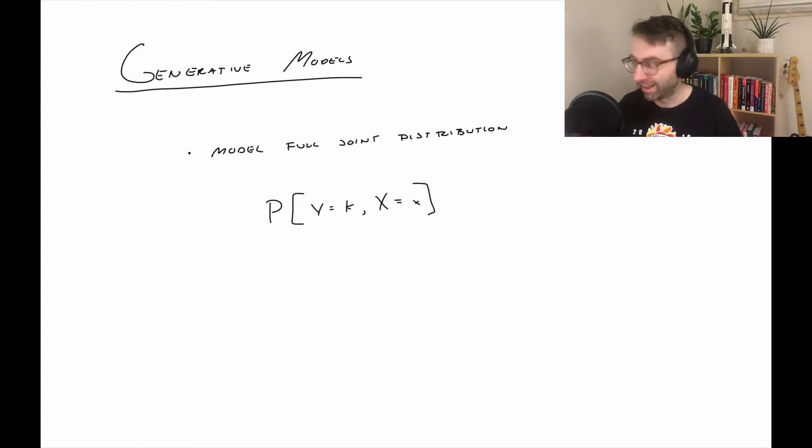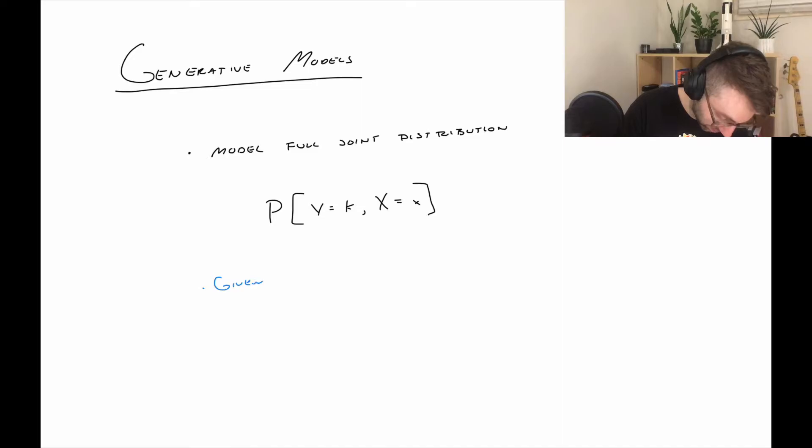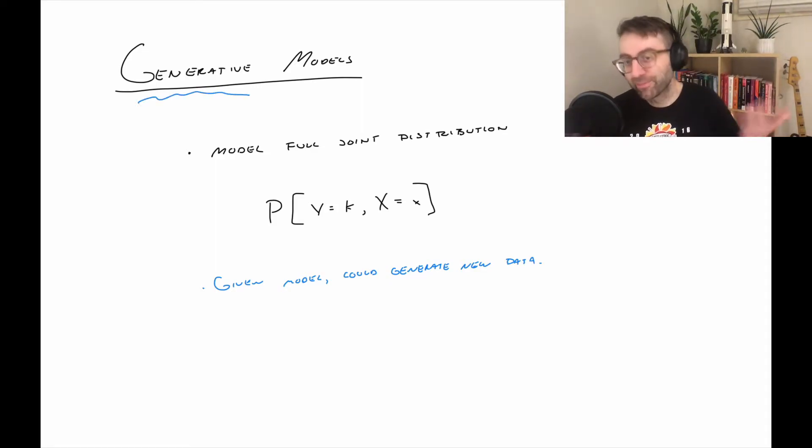So enter generative models. And so what they're going to do is they're going to model the joint distribution of Y and X. And so by doing so, given this model, you could generate new data.